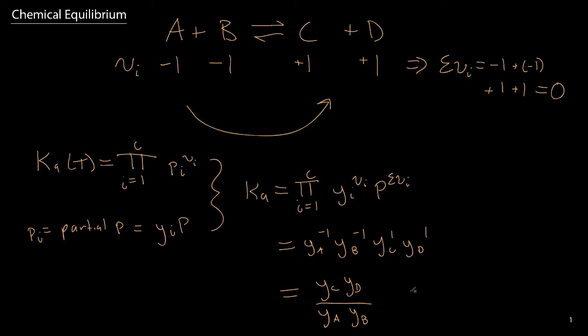Now the goal that we need to have is we need yi as a function of the extent of reaction. If we can get all of the mole fractions in terms of one unknown variable, then we have a system of one equation and one unknown, and we can figure out how far the reaction progresses from left to right, assuming that we have a value for Ka provided to us.